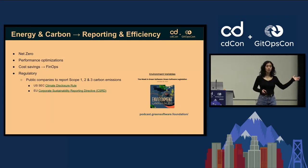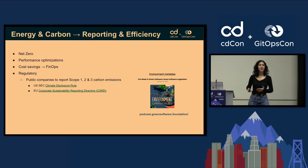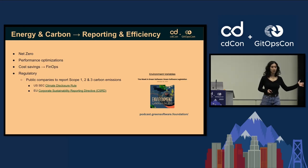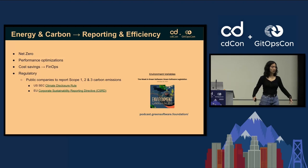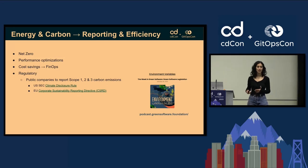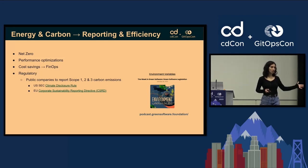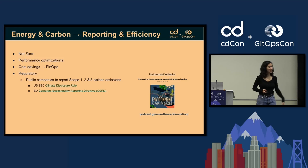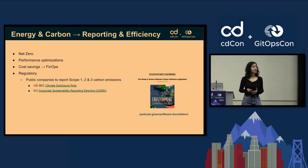And in the EU, there's already been law passed that's going to take 18 months to be implemented — the Corporate Sustainability Reporting Directive, or CSRD — which will also require companies, especially large publicly traded companies, to report on their carbon emissions. If you want to hear more about this, the Green Software Foundation, which is part of the Linux Foundation, has a great podcast called Environment Variables. One episode covers the legislation aspects and how it will impact the tech industry and cloud users as well.